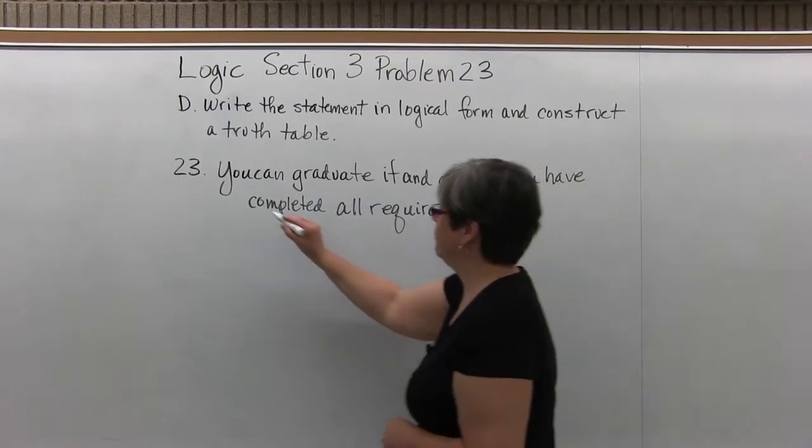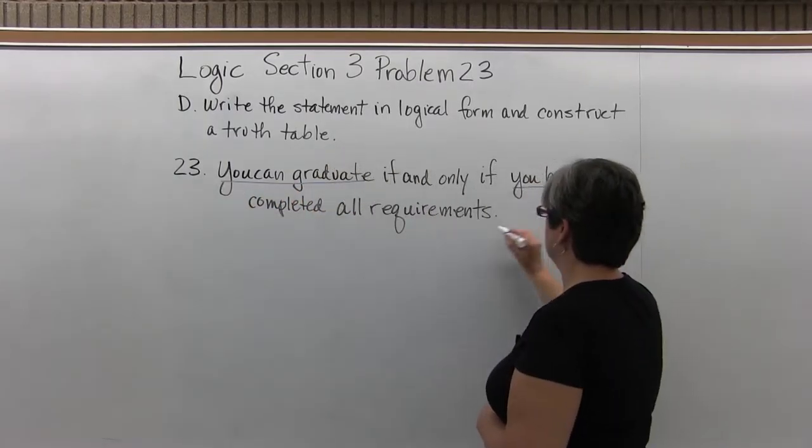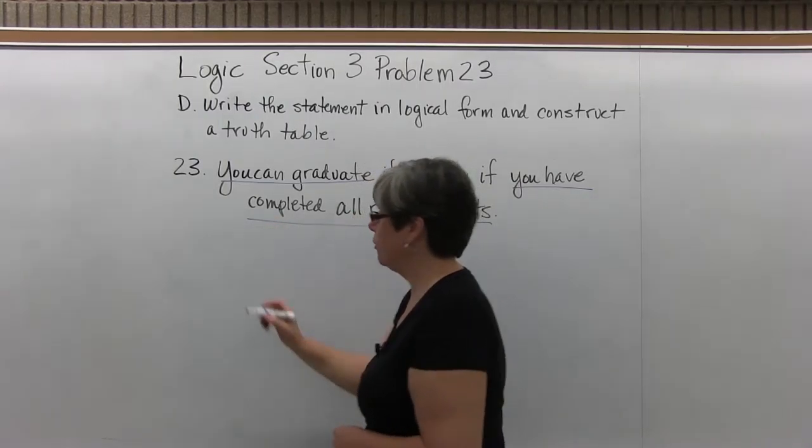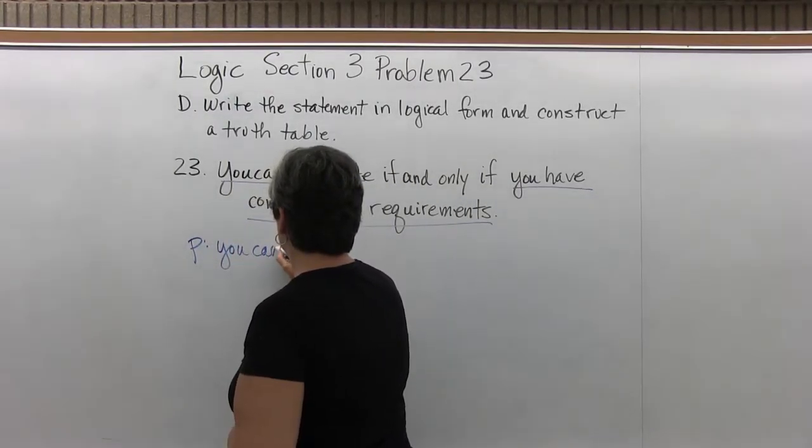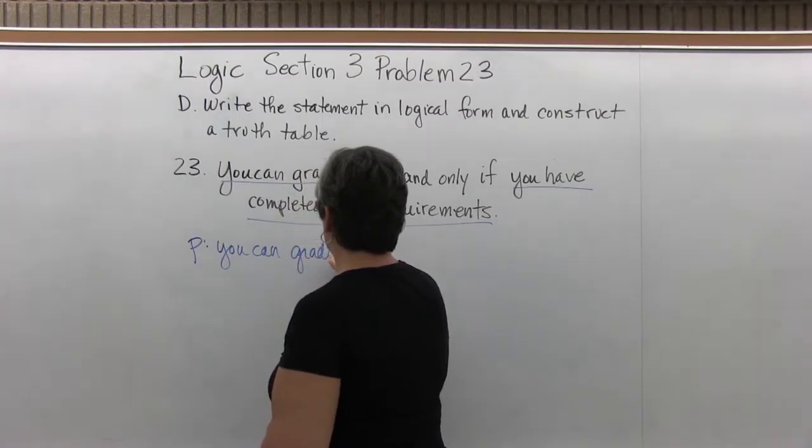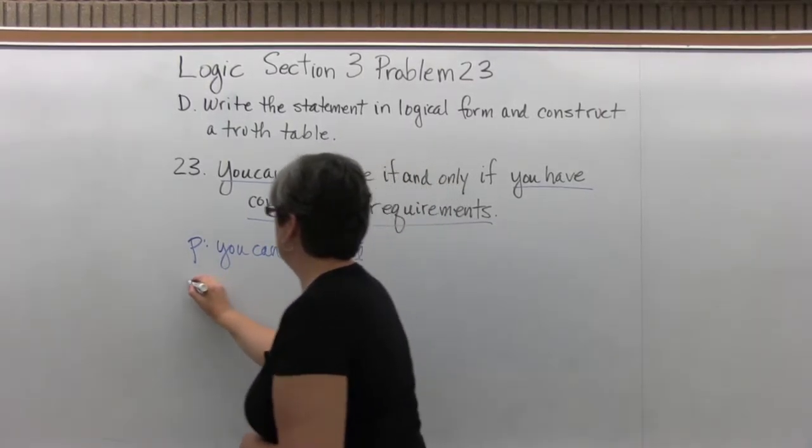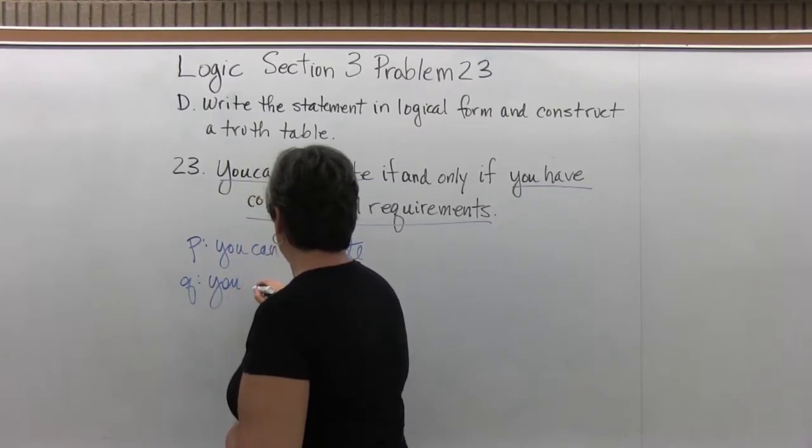We have two simple statements: you can graduate and you have completed all requirements. So we'll let P be you can graduate, and Q, you have completed all requirements.